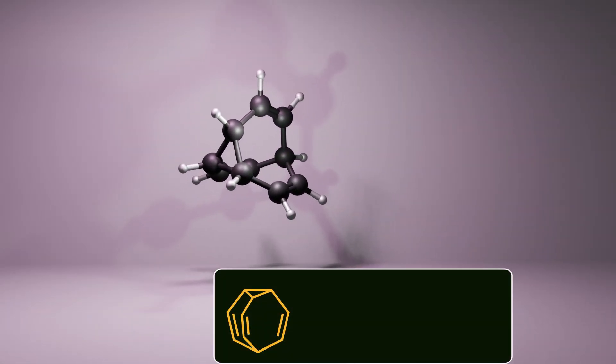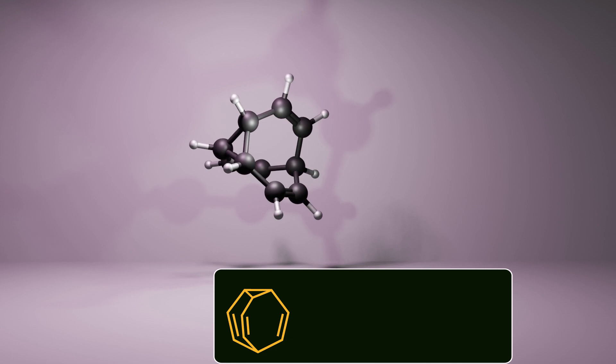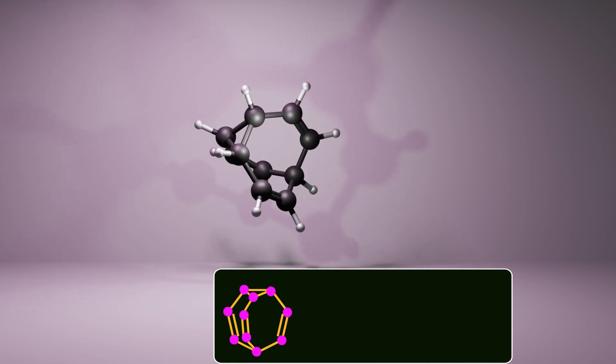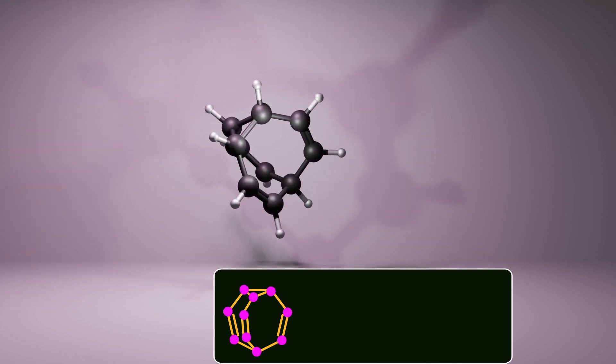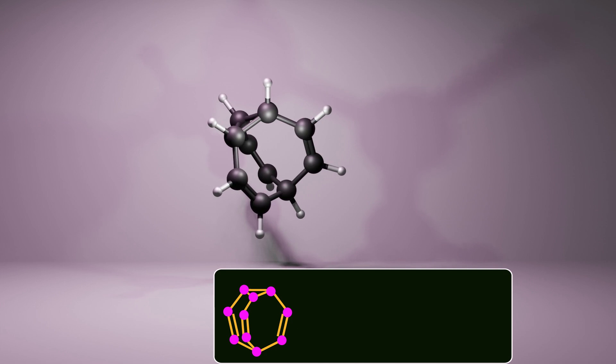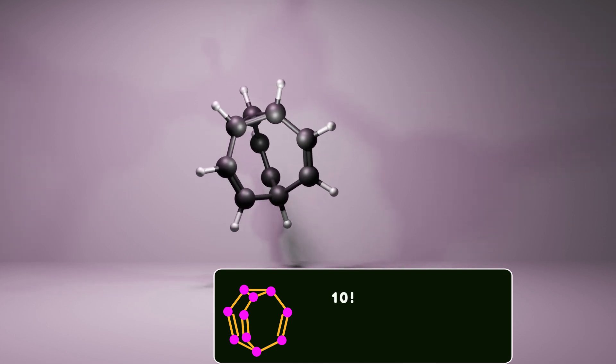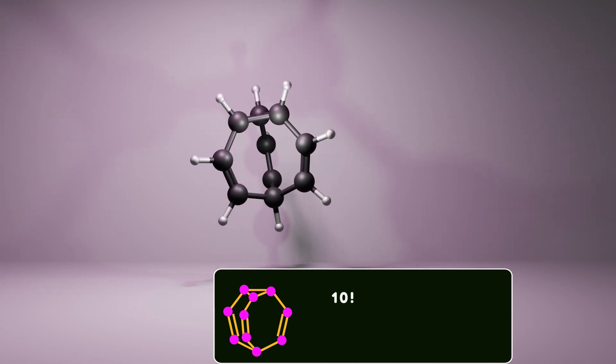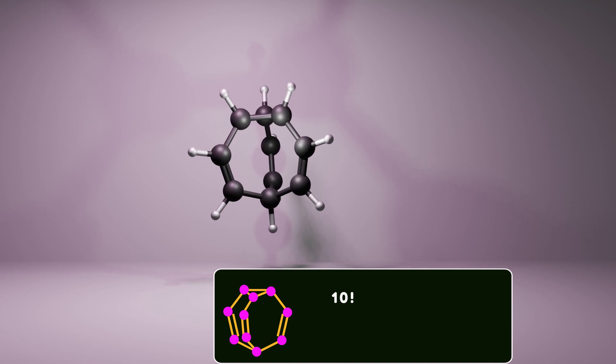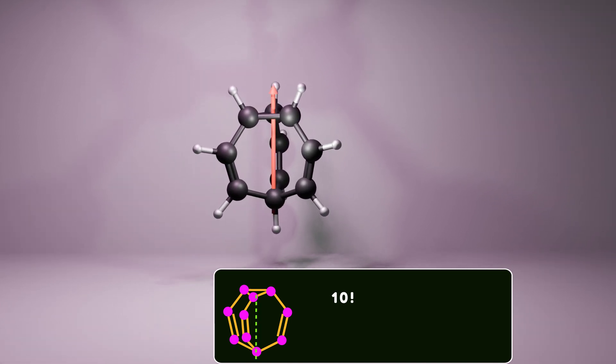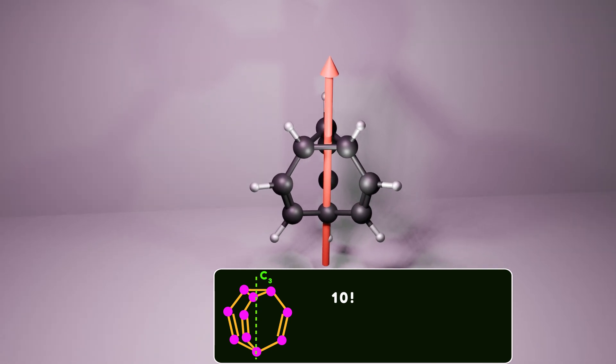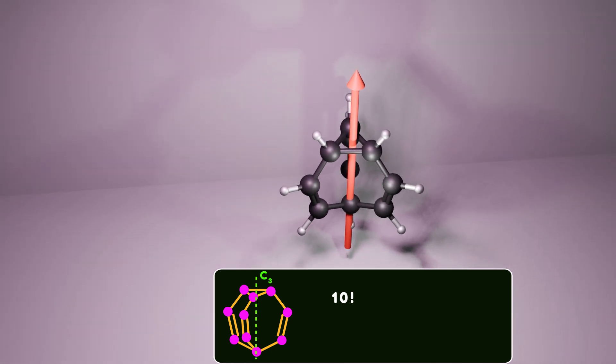Now let's involve some simple math. Bullvalene is made of 10 carbon atoms that are interchangeable with one another. We can represent this by 10 factorial to calculate the number of ways to arrange a set of objects in a specific order. In this case, the carbon atoms. Notice that Bullvalene has a three-fold axis of symmetry which passes through the center of the cyclopropene and includes the methine group.